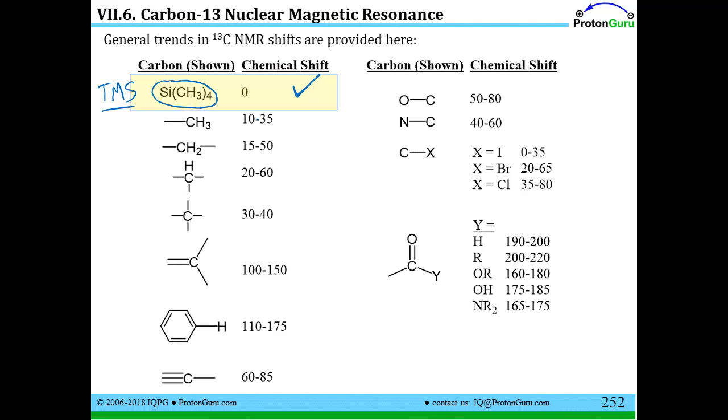Now, if we look at the actual organic groups, like a methyl group attached to an alkyl chain, in a carbon-13 NMR spectrum, that comes between about 10 and 35. If you have a CH2 along an alkyl chain, it's between 15 and 50. A CH might be as high as 60. And you can see that these alkyl components come towards the low end of the spectrum.